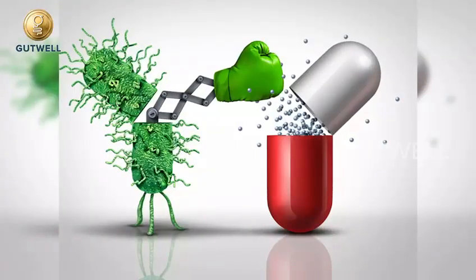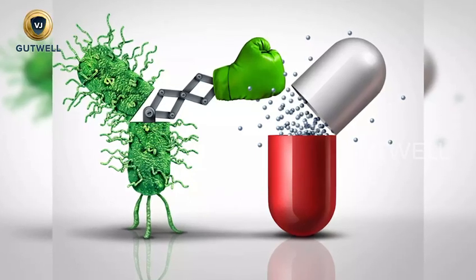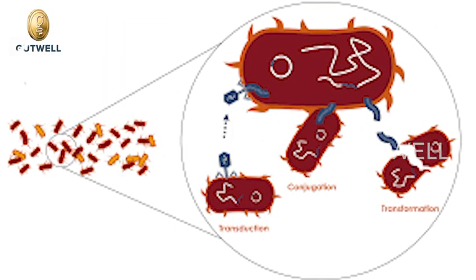How has this bacteria managed to develop resistance to this antibiotic? It either undergoes mutation or creates specific proteins that the antibiotic cannot break down, making that bacteria resistant to that antibiotic. It is also a matter of concern that this bacteria can share its drug resistance capabilities with neighbouring bacteria by sharing genetic information.